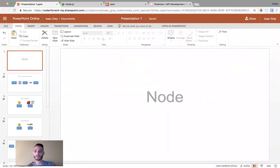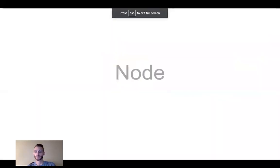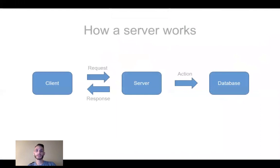Let's start off by talking about Node. The first thing we should understand about Node is how a server works, and it's basically made up of three main components: a client, the server, and the database. The server acts as the middle layer between the client and the database.